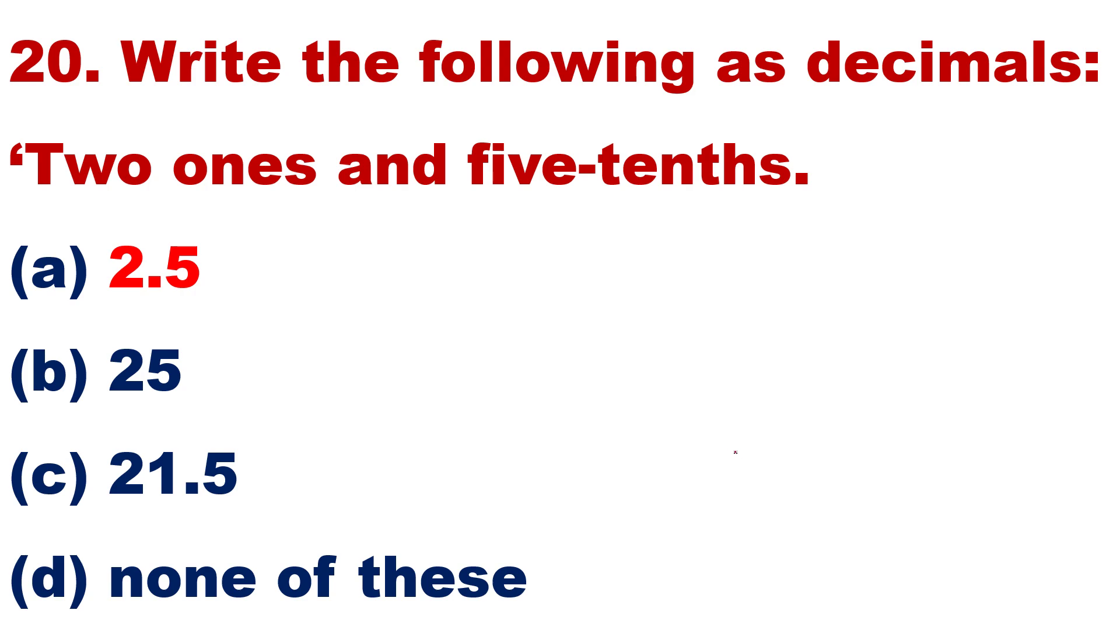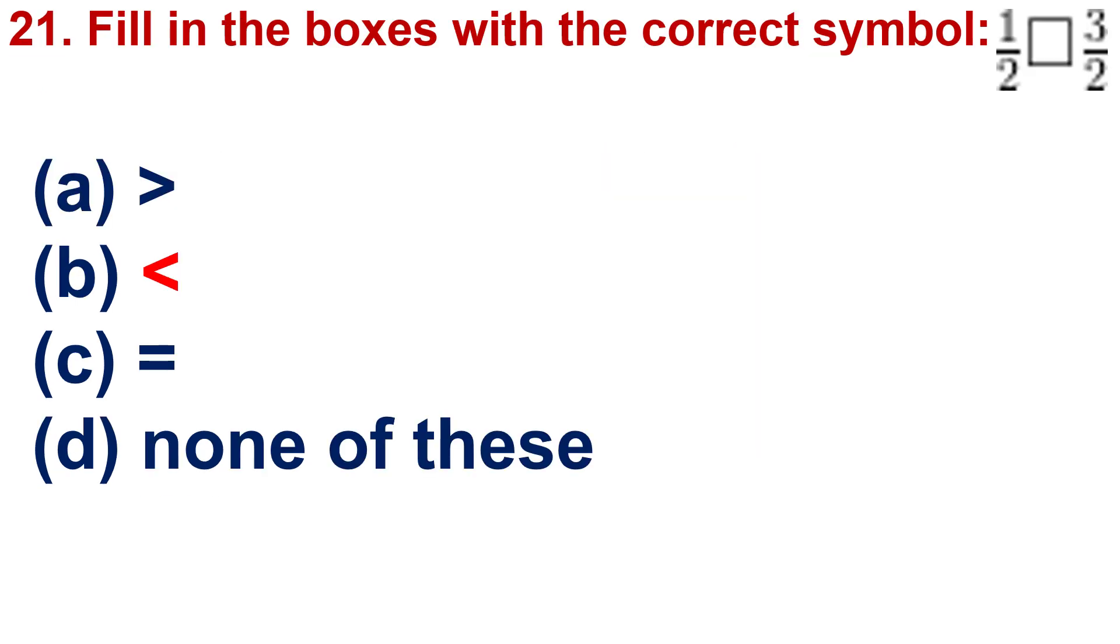Aage badta hoon. Question number 20: Write the following as decimals - Two ones and five tenths. Maybe your answer is correct, but correct answer you have to write in the comment box.